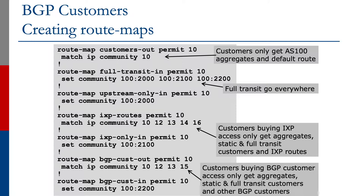For the customers outbound, we match community 10. Customers get only our aggregate route and a default route, because we've set default originate and we're only matching anything that is in community 10. There is no other statement inside this route map, which means everything that does not match community 10 is going to be dropped. The next route map is full-transit-in — under permit 10, we are going to set the community 100:2000, 100:2100, and 100:2200.